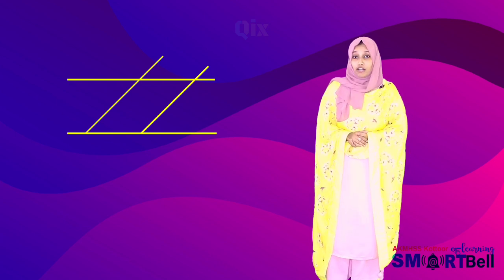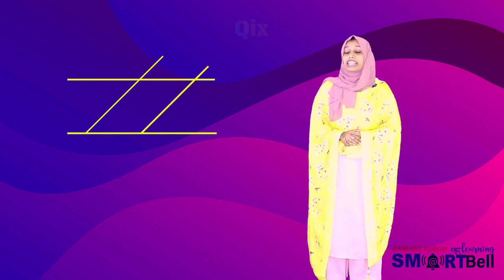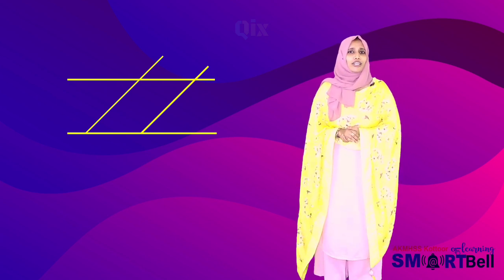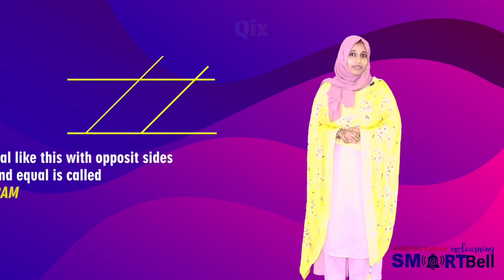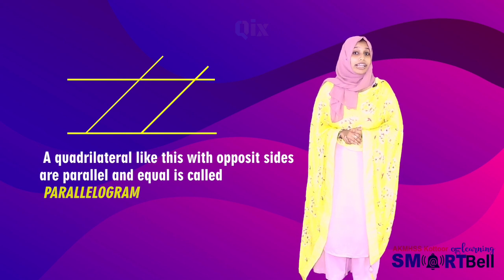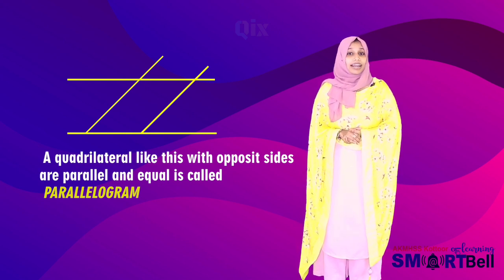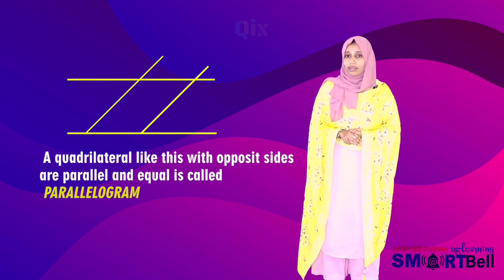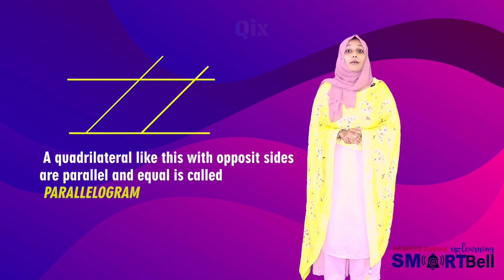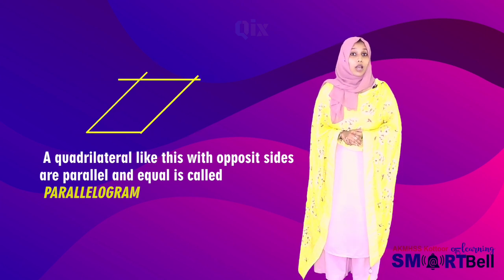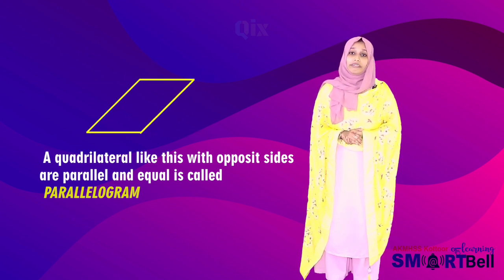Does any pair of opposite sides meet when they are extended? No. A quadrilateral like this, with opposite sides parallel and equal, is called a parallelogram. What is a parallelogram?